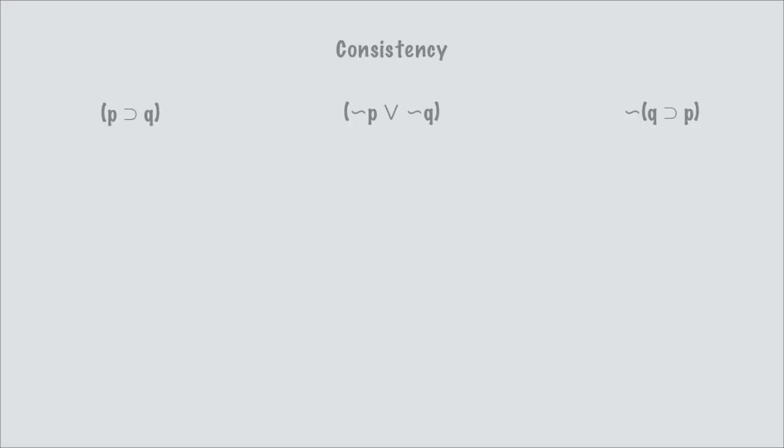For the consistency problem, we have three statements with only two variables, which means only four rows. A set of statements is consistent if there is one row in their joint truth table in which they all come out true.